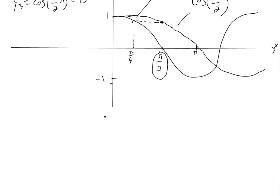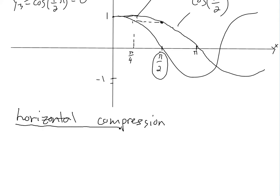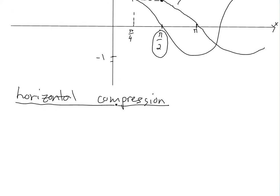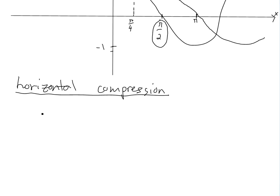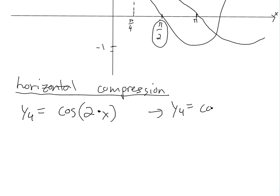So now if we want a horizontal compression: if we were to compress it, this is going to be the opposite. This is going to be y4 equals cosine of 2 times x. In general form, we'll have y4 equals f of c times x, where c is greater than 1.